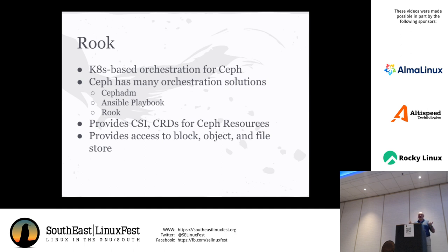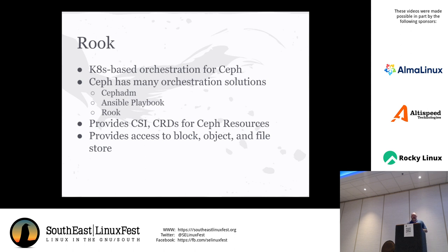Some features of Rook as the orchestration layer: it provides the CSI, although you can get the CSI without Rook. It provides custom resource definitions for all Ceph resources - basically a way of abstracting entities. You can abstract your cluster, a file system, a block store, an S3-compatible bucket, and things like that. Rook provides access to all three modes: block, object, and file store underneath.